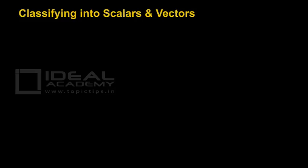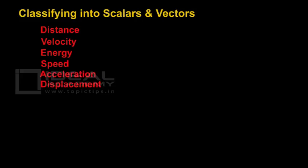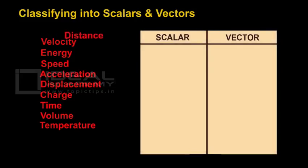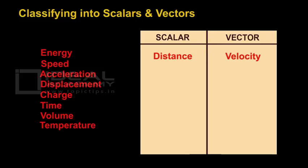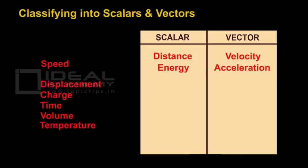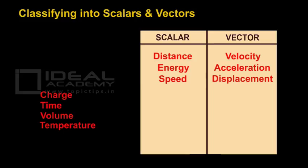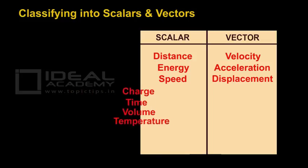Let us look at some physical quantities and identify which are scalar and which are vector. Distance — scalar quantity. Velocity — vector quantity. Energy — scalar quantity. Acceleration — vector quantity. Speed — scalar. Displacement — vector. Charge, time, volume, and temperature are all scalar quantities.